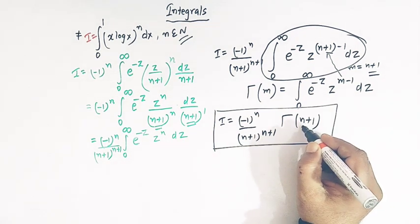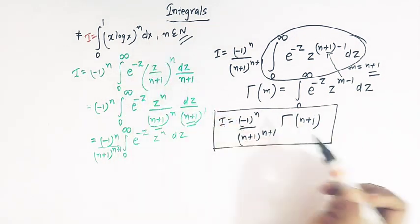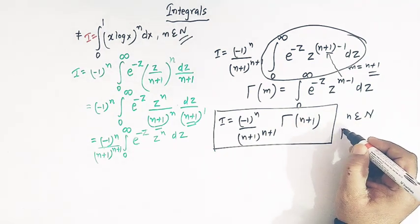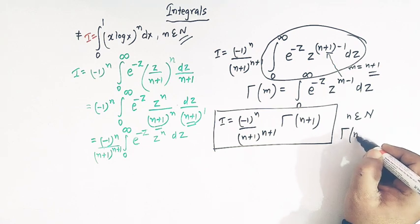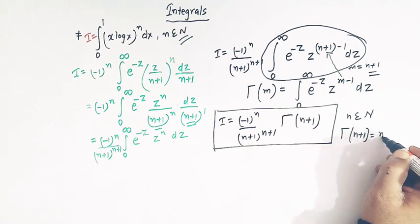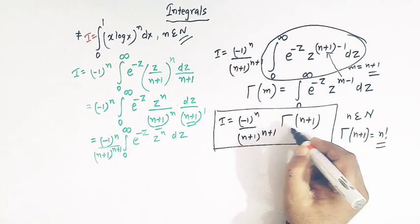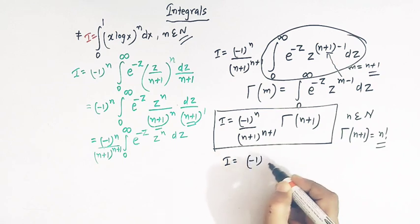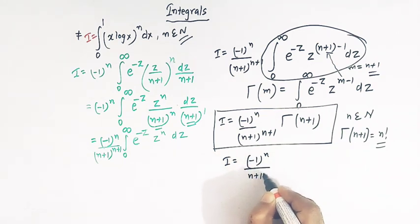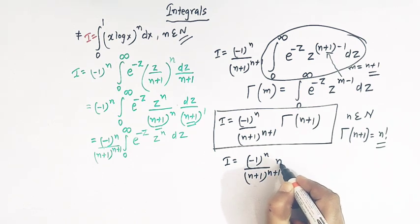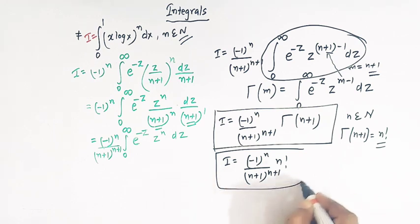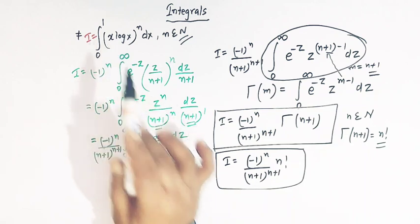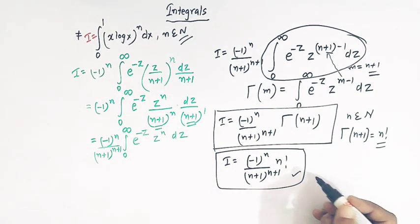Since n belongs to the set of natural numbers, by definition we can write gamma(n+1) equals n factorial. Replacing gamma(n+1) by n!, the final value of the integral is: I equals (minus 1) raised to n times n factorial, divided by (n+1) raised to (n+1).